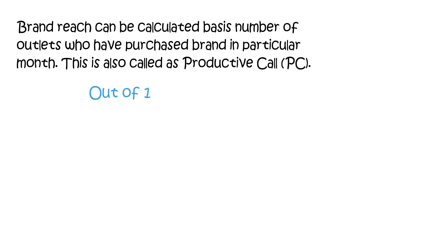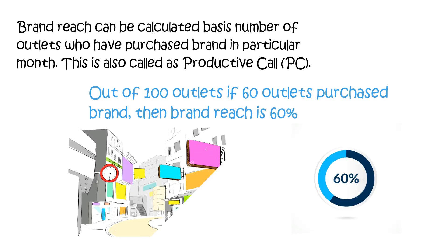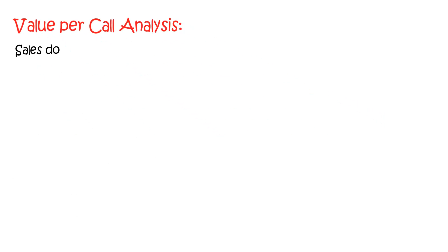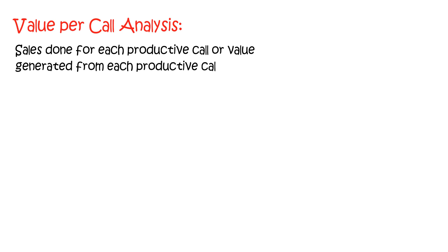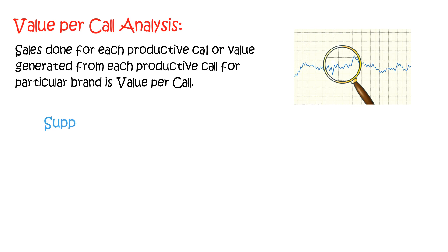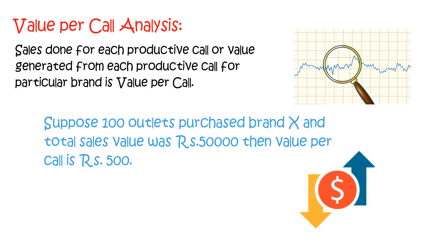This is also called a productive call. For example, out of 100 outlets, if 60 outlets purchased the brand, then brand reach is 60%. Moving on to value per call analysis: the sales done for each productive call, or value generated from each productive call for a particular brand, is value per call. Suppose 100 outlets purchased brand X and total sales value was 50,000 rupees — then value per call is 500 rupees.